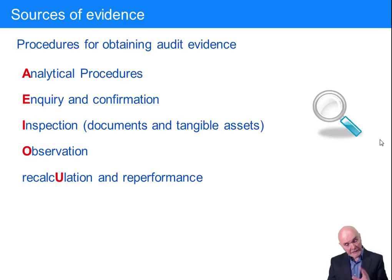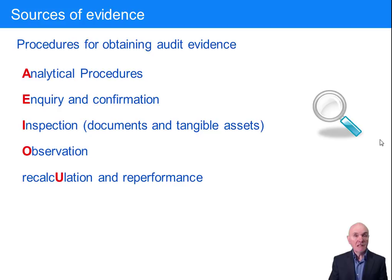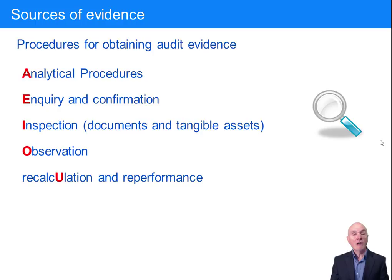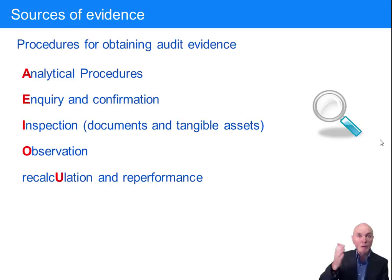Sometimes we'll use something called a letter of representation — where you get management to write you a letter saying things like: the receivables have been fairly valued, the inventory has been fairly valued, we're not intending to close any premises, there has been no fraud in the business we are aware of. You get them to sign that letter. Now at least it's written, and the very act of signing a piece of paper making certain claims focuses people's attention. Confirmation is where you go outside the business — writing to the bank asking how much money the client had, writing to customers asking how much they owed. Third-party written confirmation can be a very powerful source of evidence.